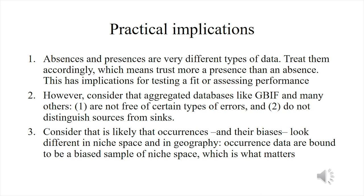Finally, consider that occurrences and their biases look different in niche space than in geography. We tend to think of bias as something that only matters in geography, but that is not the case. It may well be that in geography points are unbiased but highly biased in environmental space, or vice versa. Maybe you sampled along a highway that crosses a mountain range — you are highly biased in geography but not so much in environmental space. So check occurrence data in niche space, because that is what matters for niche modeling.